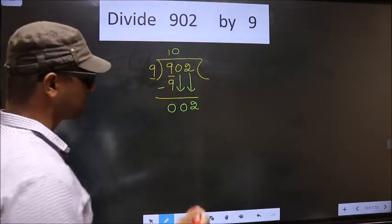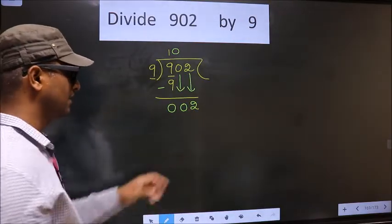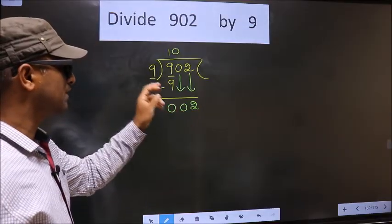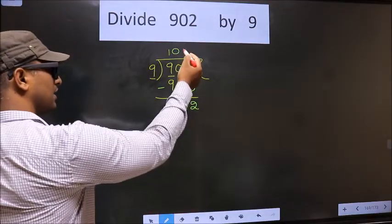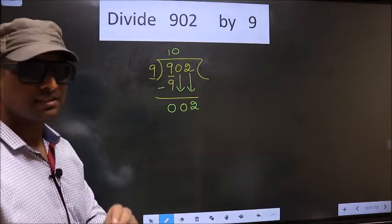Next. This is where the mistake happens. And the mistake is this. Here we have 2. Here 9. 2 is smaller than 9. So what many do is, they directly put a dot and take 0 here. Which is wrong.